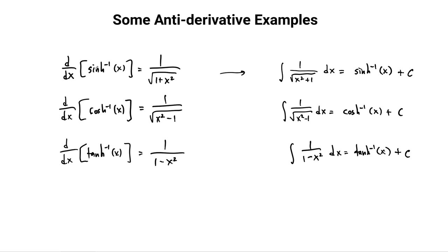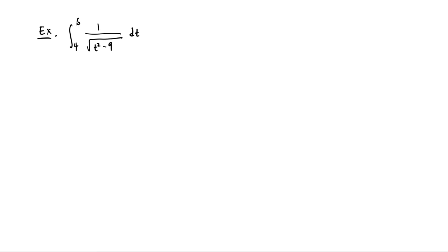There are three more versions of each of these — cosecant hyperbolic, secant hyperbolic, cotangent hyperbolic — so you should be able to work those out as well. We're just going to use these ones for this video where we compute a couple of antiderivatives. Here's our first example: the integral from 4 to 6 of 1 over the square root of t squared minus 9 dt.